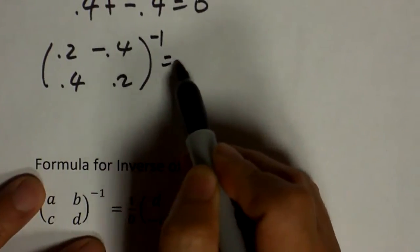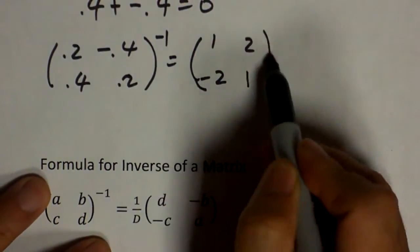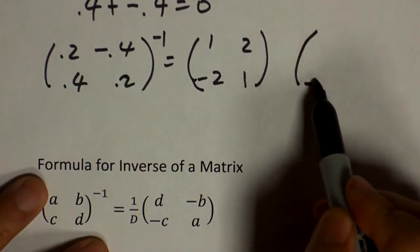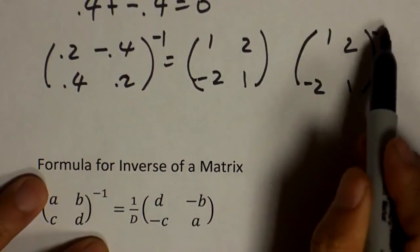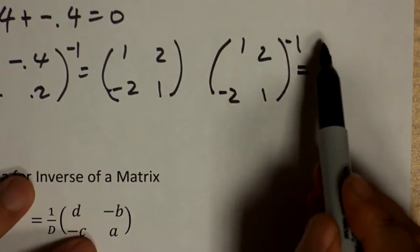Now, you might wonder, how did I get this matrix? Now, I'm going to show you the inverse of this matrix is the same as one, two, negative two, one. And also, you have negative two, one, two, one inverse equals to this matrix. Point two, negative point four, point four, point two.